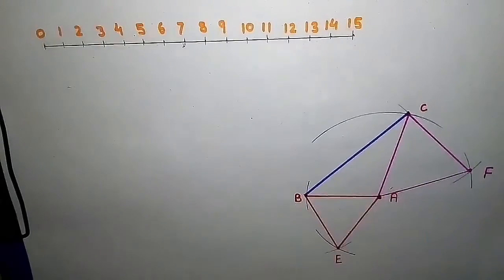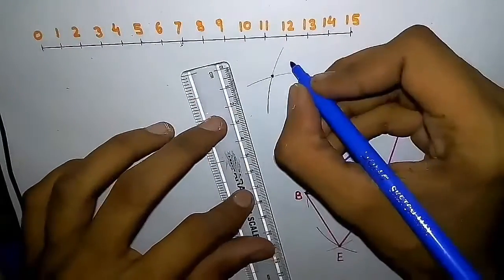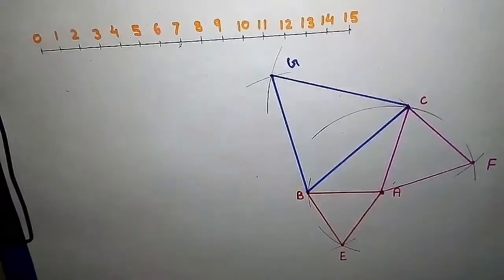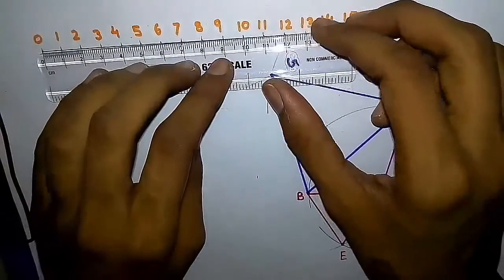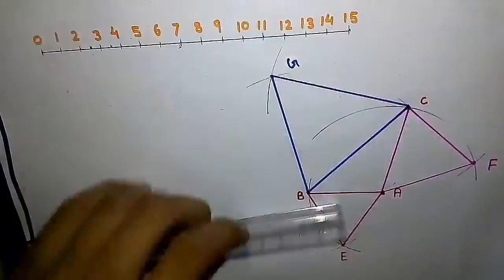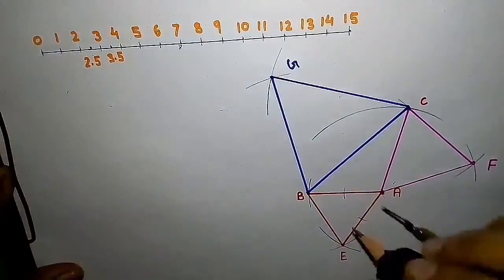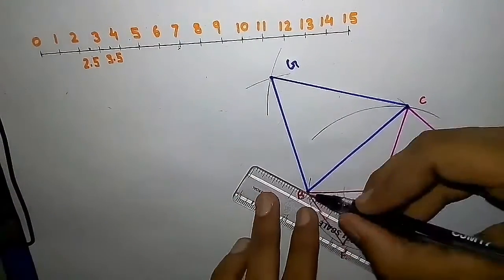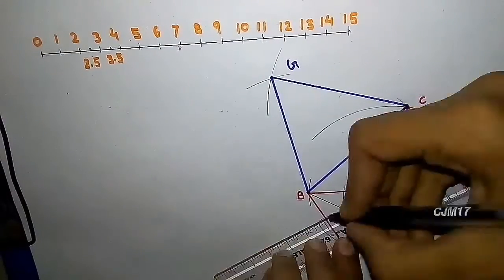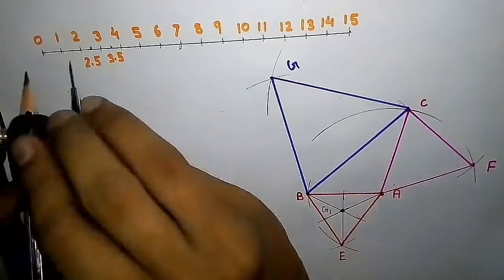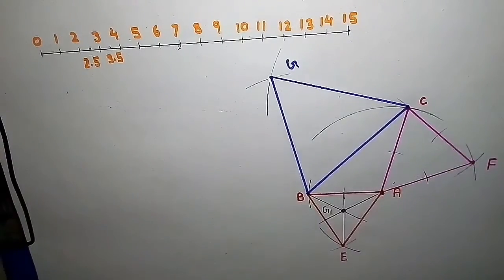To draw medians, cut an arc of radius equal to half the side length and join it with the opposite vertex. Draw all the medians of a triangle, and the point of intersection of the medians will give the centroid of that triangle. Do this for each equilateral triangle.